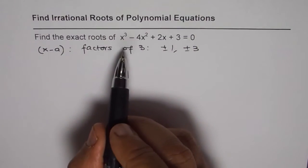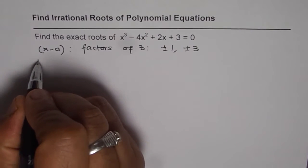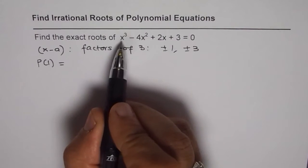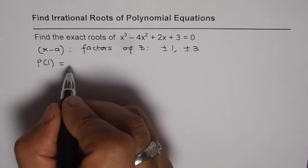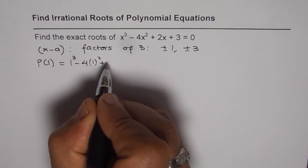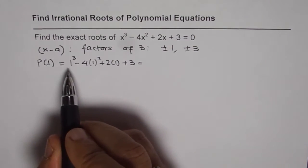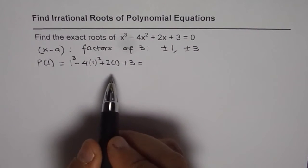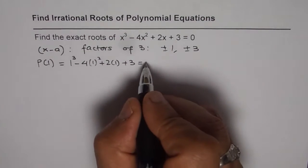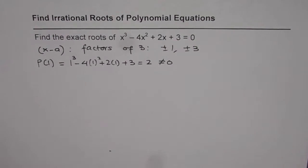We will look for the value of the polynomial when it equals 0 for any of these values. Let's begin with P(1). If you substitute 1 for x, you get 1³ - 4(1²) + 2(1) + 3, which is 1 - 4 + 2 + 3. The positive values sum to 6, and 6 - 4 = 2, so it's not equal to 0. Therefore x - 1 is not our factor.